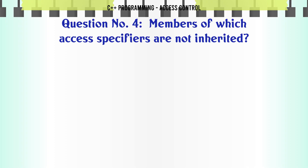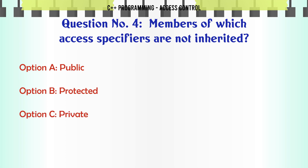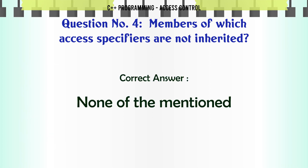Members of which access specifier are not inherited? A. Public. B. Protected. C. Private. D. None of the mentioned. The correct answer is: None of the mentioned.